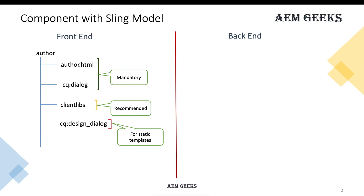Then there is the design dialog. This is basically the same as the regular dialog, but the key difference is that the design dialog saves its values at the site level — at a common place — so those properties are available throughout your site. In contrast, regular dialog properties are available only on that specific component node or page. You should know that design dialogs are only used for static templates.